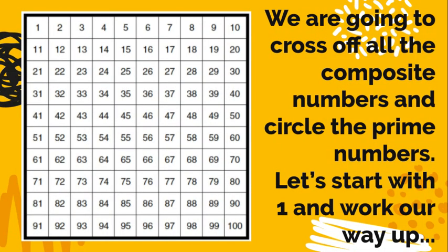Next thing, we are going to cross off all of the composite numbers, and then we're going to end up at the end with all of your prime numbers circled. We'll start with the number 1, and we're going to work our way up.